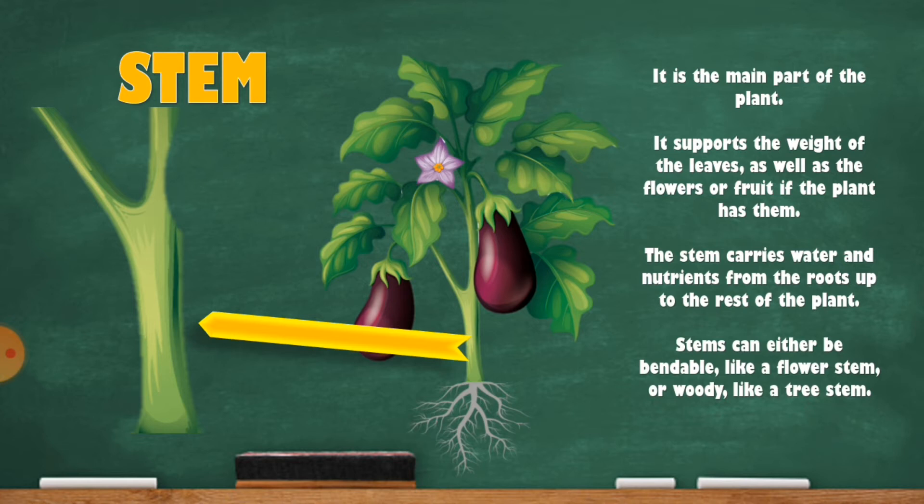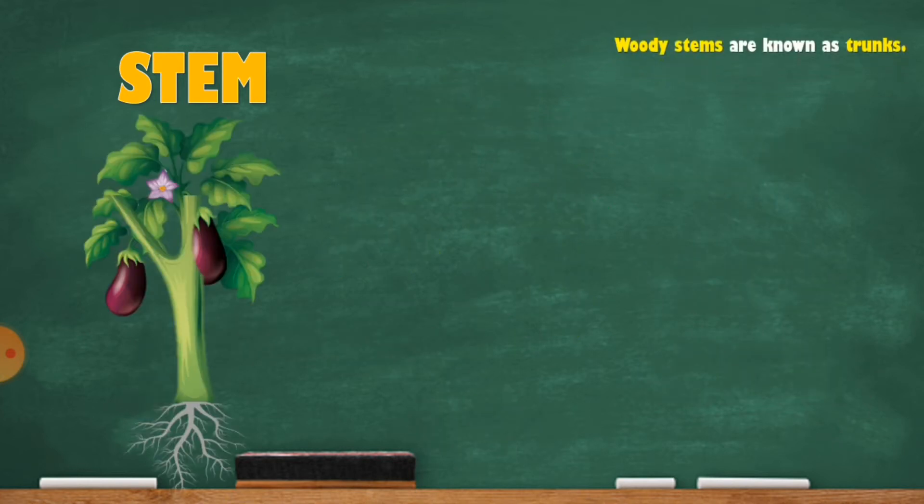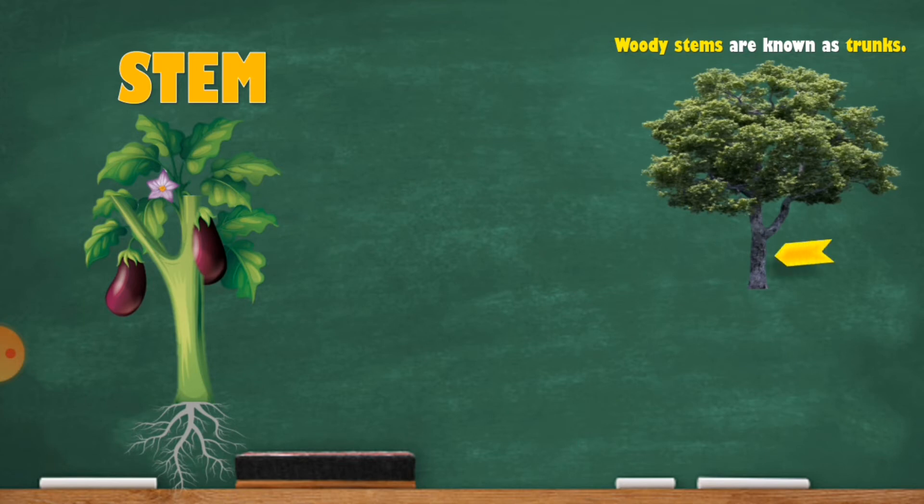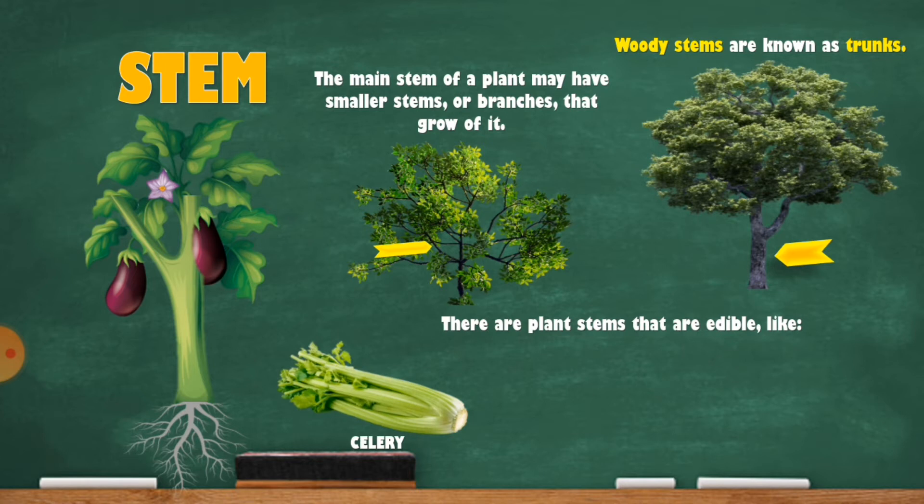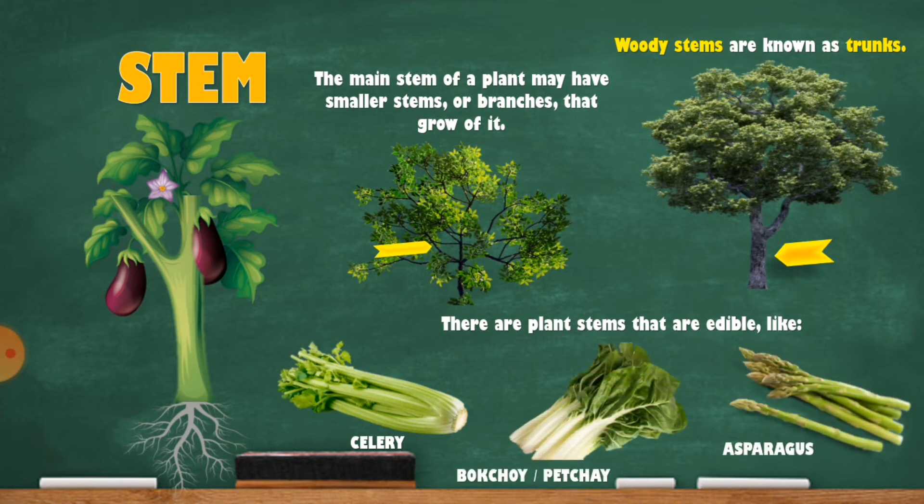The plant stems can either be bendable like a flower stem, or woody like a tree stem. Woody stems are known as trunks. The main stem of a plant may have smaller stems or branches that grow off it. There are plant stems that are edible, like celery, bok choy or pechay, and asparagus.